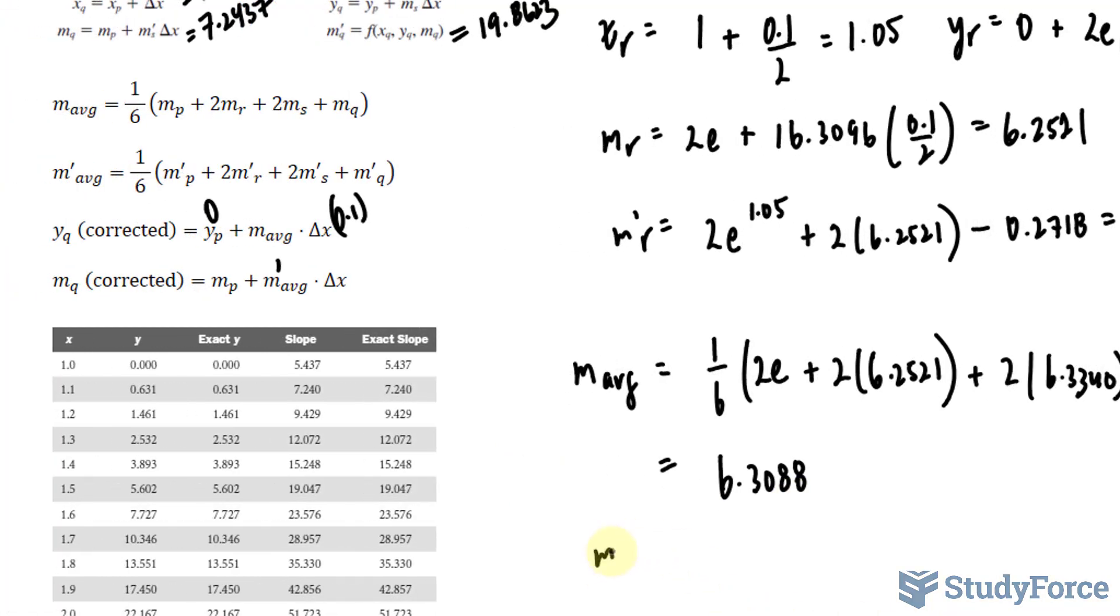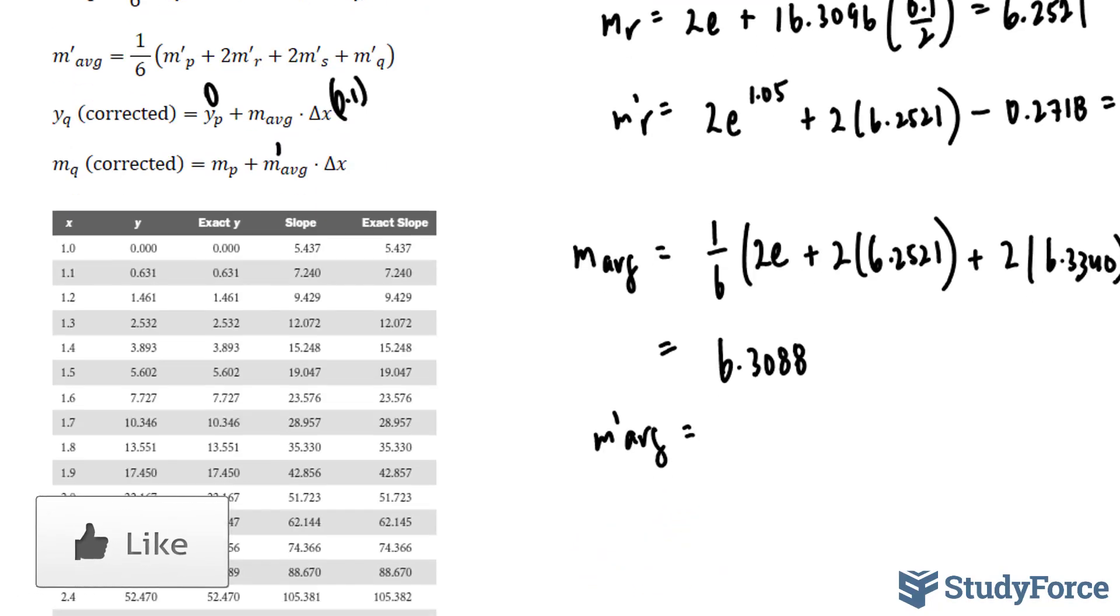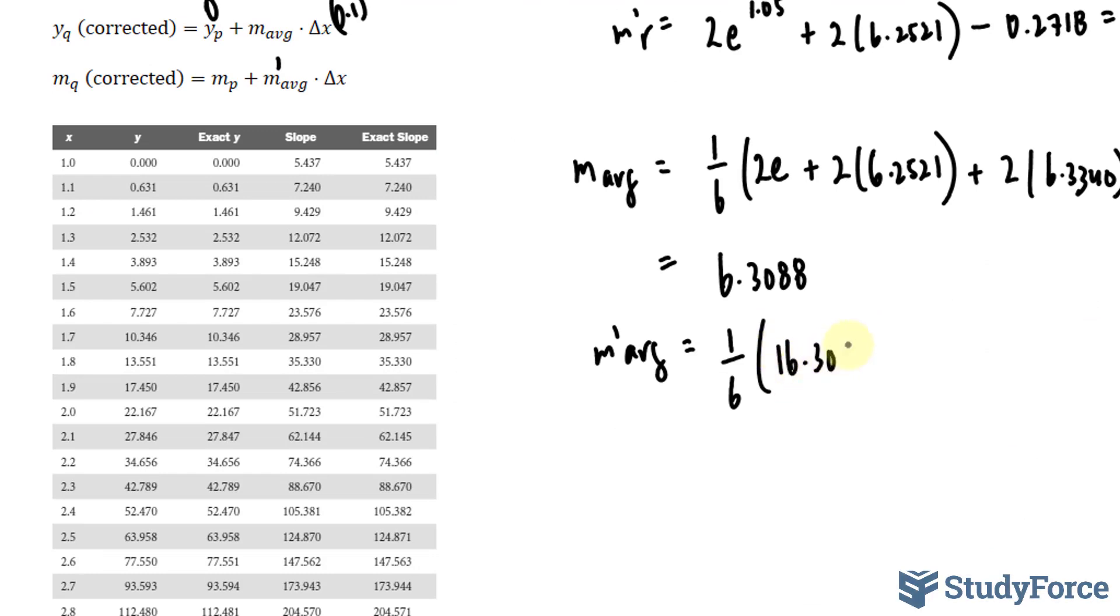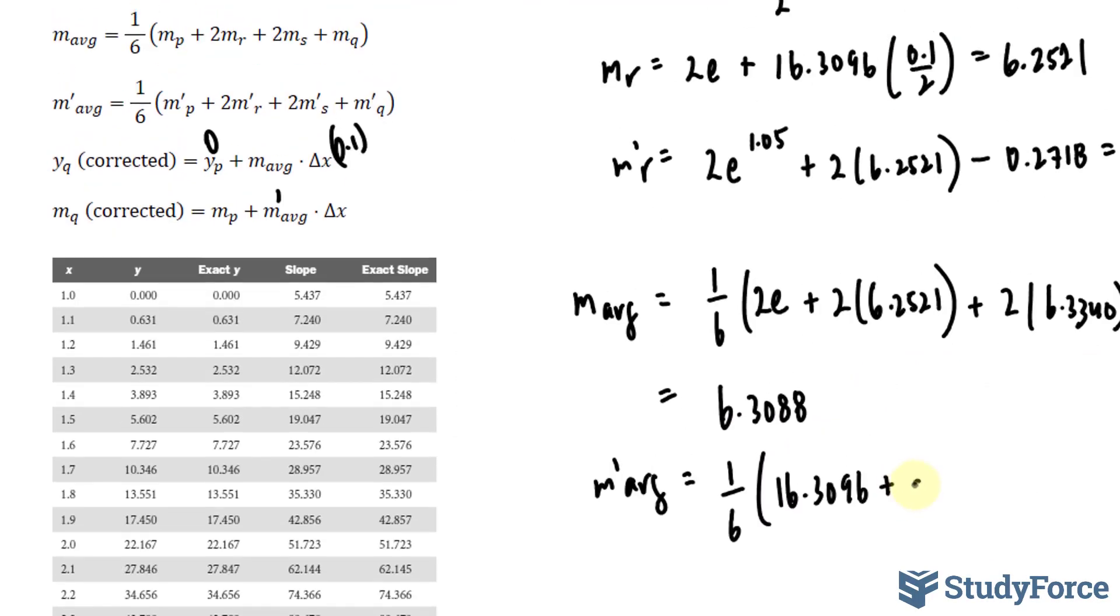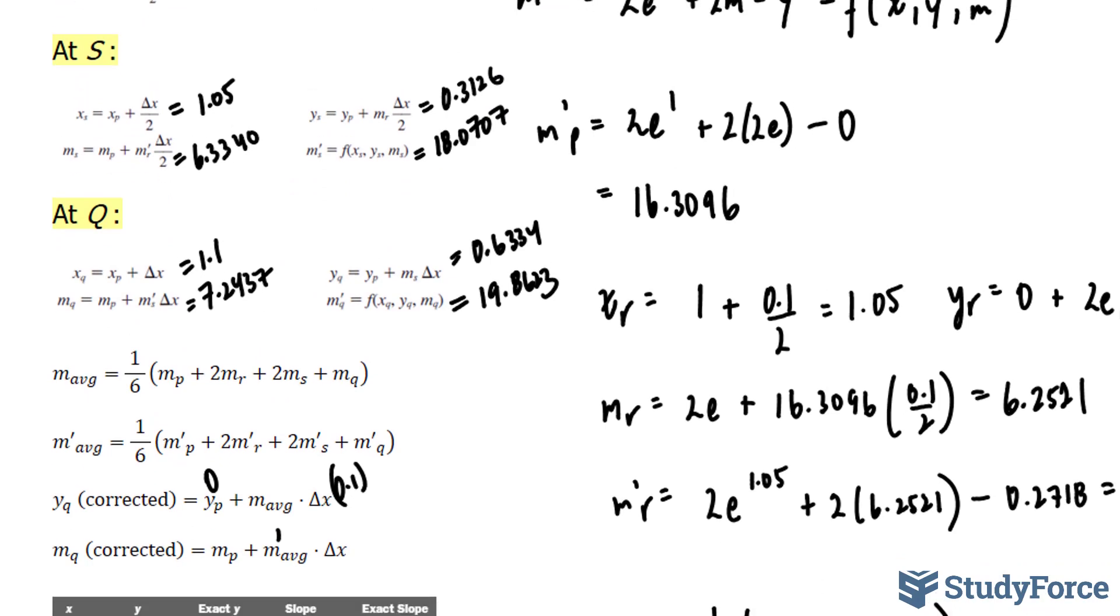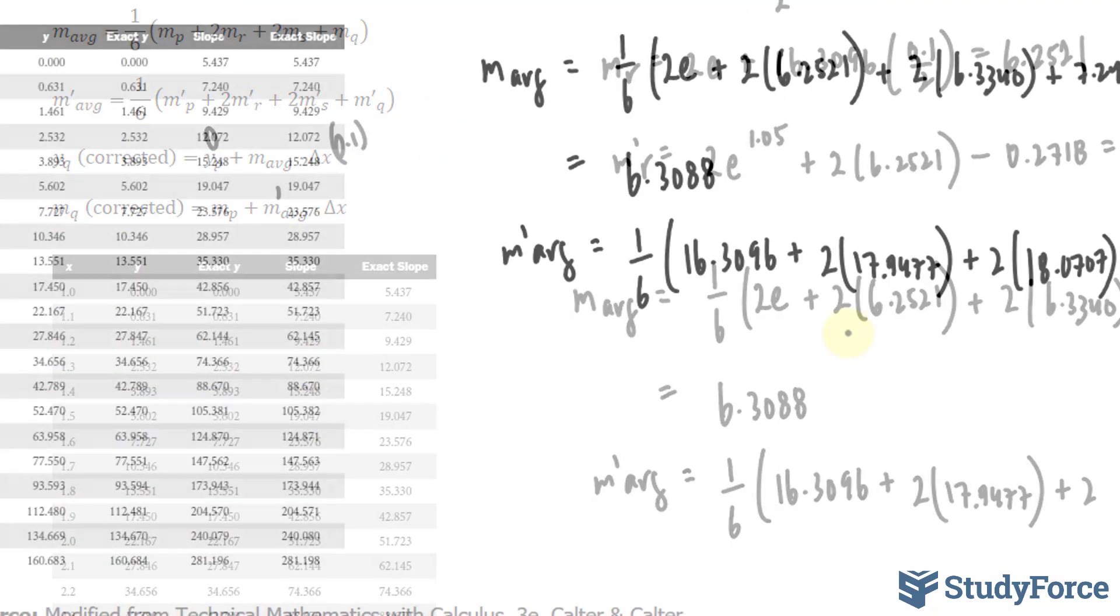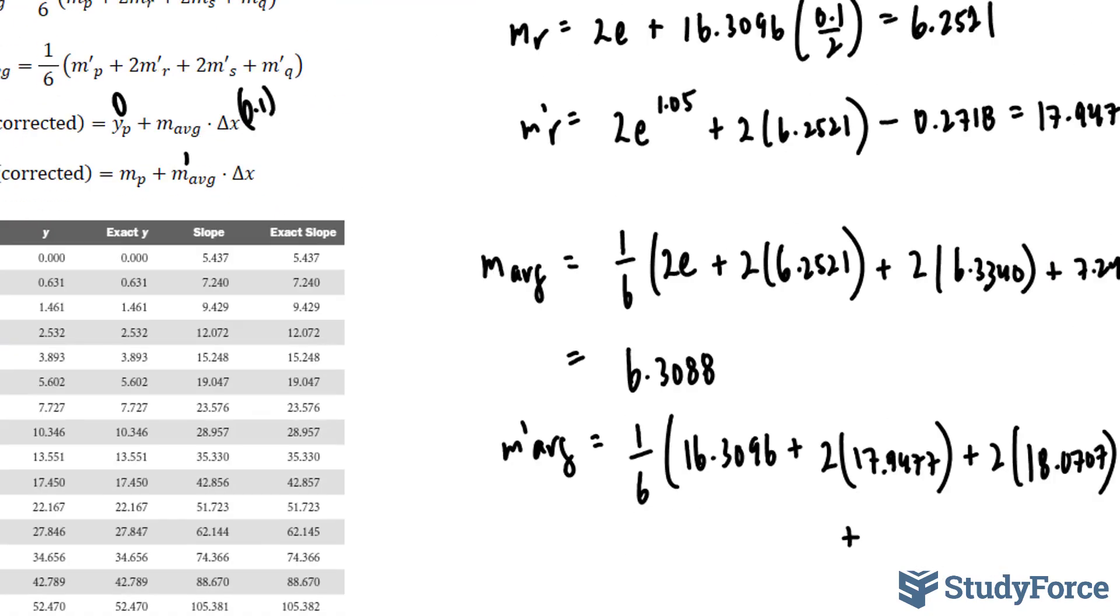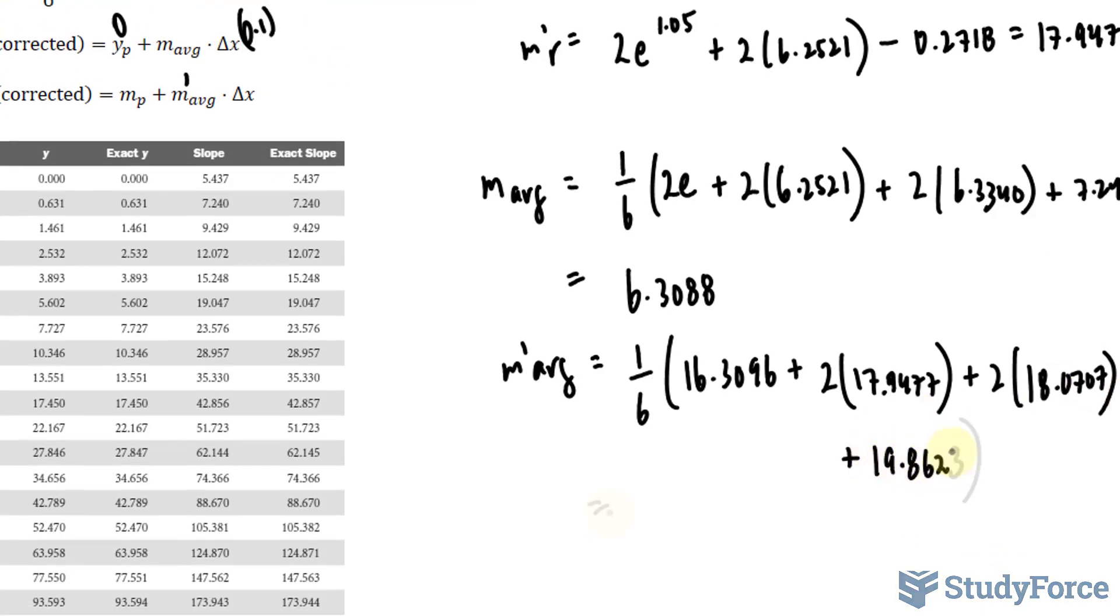Next, we find out what m'_average is. We'll use this formula. I'll fill it in for you. m'_P was 16.3096, plus 2 times m'_R, which happened to be 17.9477, plus 2 times m'_S, which we found over here to be 18.0707, plus, and the last part of this is m'_Q, which is 19.8623. Calculating this, you should end up with the number that's shown on your screen.